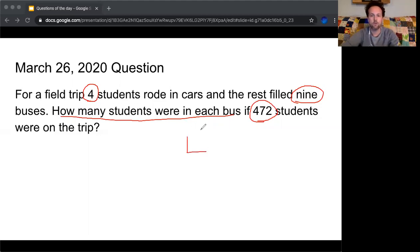So we know that there were 472 students total. So four students rode in cars and the rest filled nine buses. So we're going to, based on the wording in the question, we're going to assume that all of the buses were filled equally. So I have these four students that rode in cars, but then every other student rode in a bus.